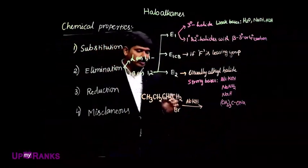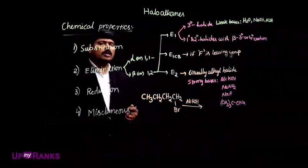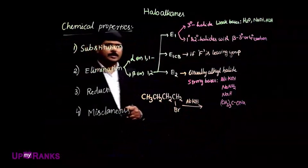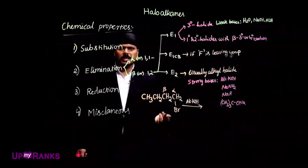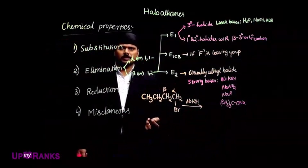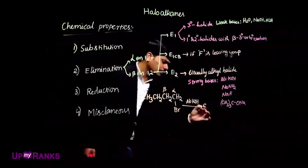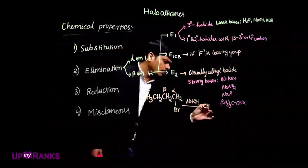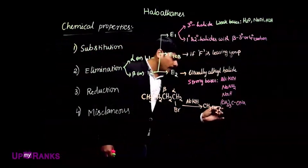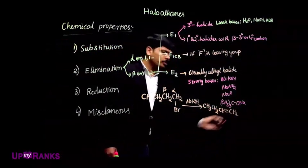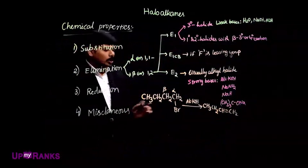For example, if I am using alcoholic KOH for 1-bromobutane, what are we going to get? There is only one alpha-beta chance — I can remove only one beta hydrogen. So that gives only one product. Only one product we are going to get. That is the only chance here with no other possibility.